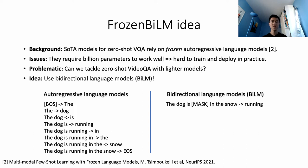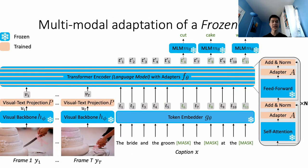In this work, we instead build on frozen bidirectional language models, or BiLM, and show that with much fewer parameters, they can perform better for zero-shot video QA. We start from a bidirectional language model pre-trained with masked language modeling on web text corpora. Its weights are kept frozen to preserve its text-only knowledge. We adapt the BiLM to multimodal inputs by equipping it with a frozen visual backbone, a visual-to-text projection, and a set of lightweight adapters.